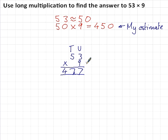3 × 9 is 27. Right, the 2 there, the 7 there. 50 × 9 is 450, and 450 plus 20 is 470. So that gives me the final answer of 477. I'm probably right.